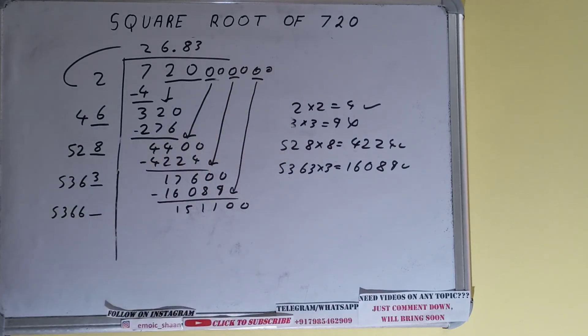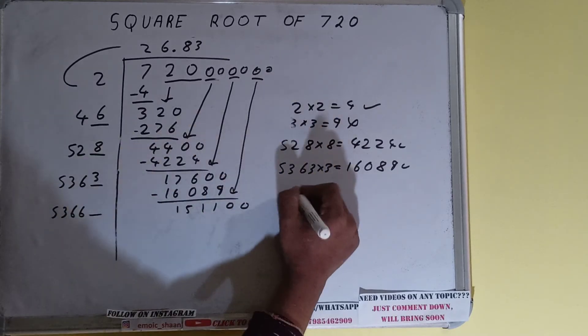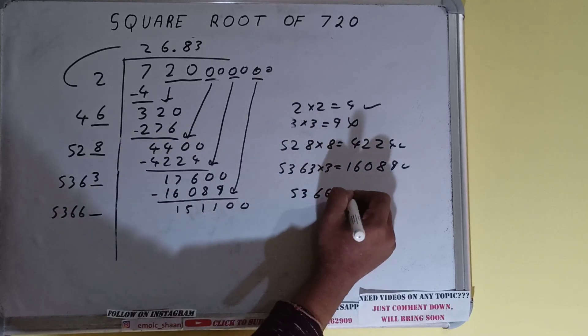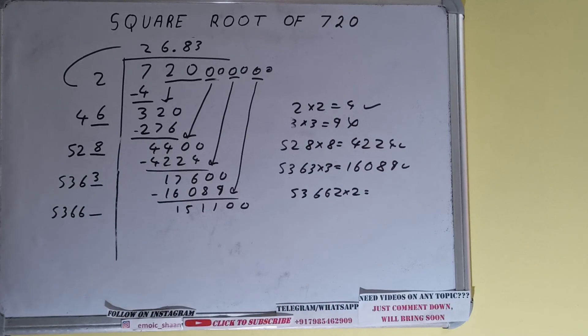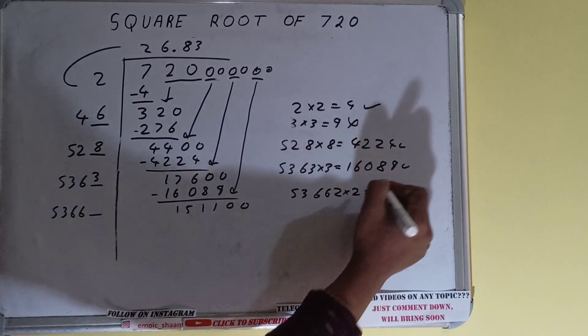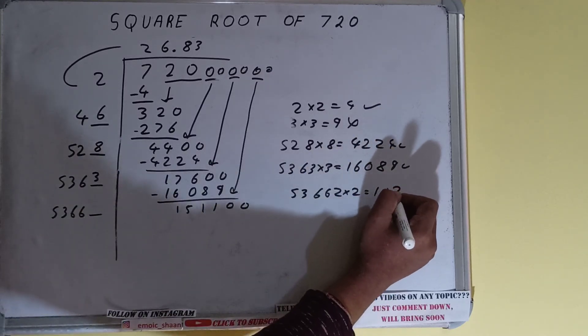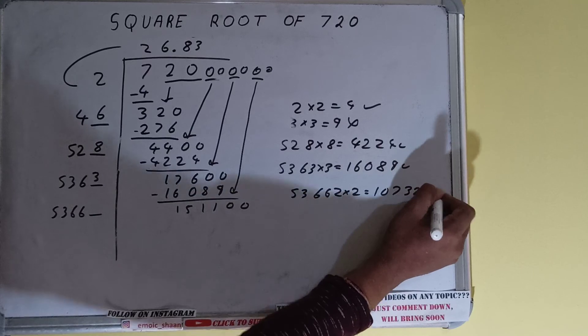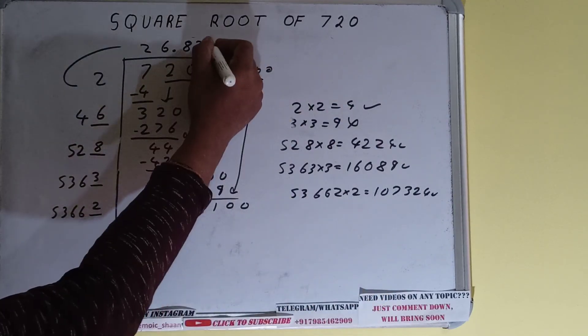Now we can try 2 times. 5366 times 2 into 2 we can try, it will be 107324, that is good to take. So 2 here and 2 here, but we don't need to calculate because we got the answer correct up to 3 decimal places.